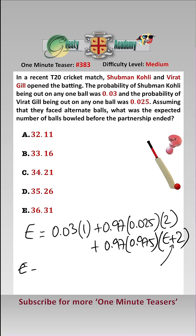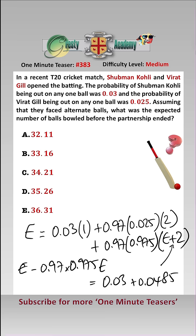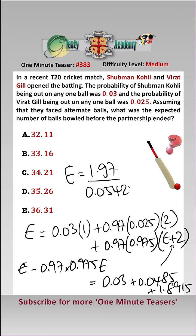we get that E minus 0.97 times 0.975 times E is equal to 0.03 plus 0.0485 plus 1.8915. Therefore E is equal to 1.97 over 0.05425, which is 36.31 — answer E — that is the expected number of balls bowled before their partnership is ended.